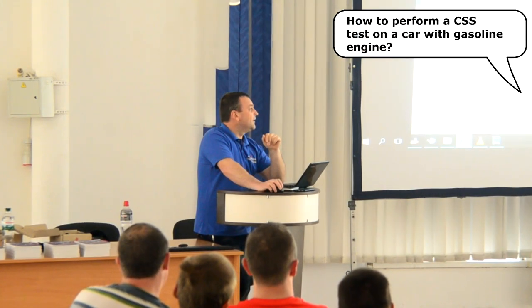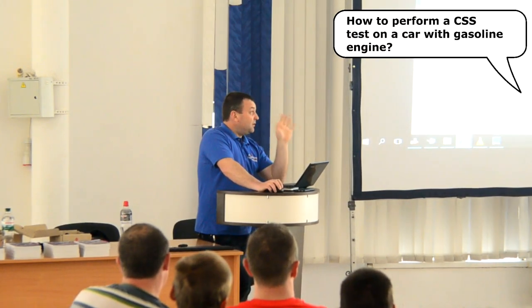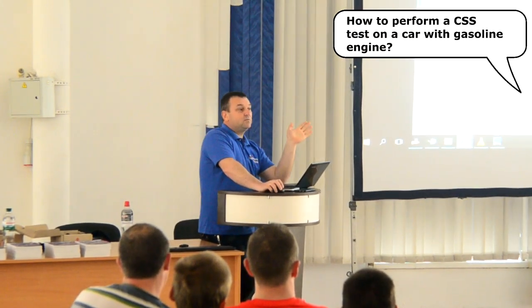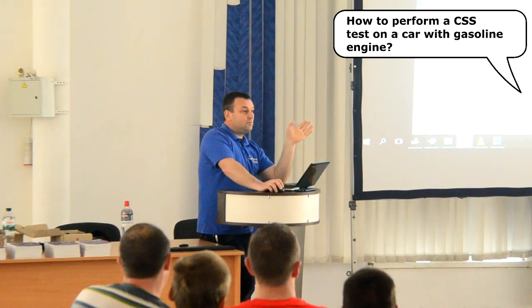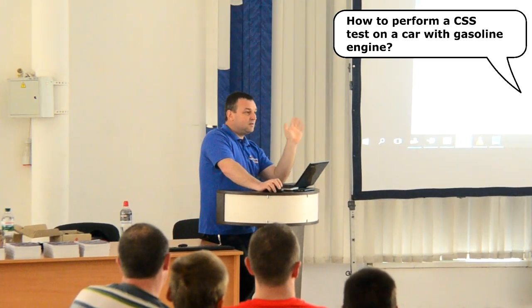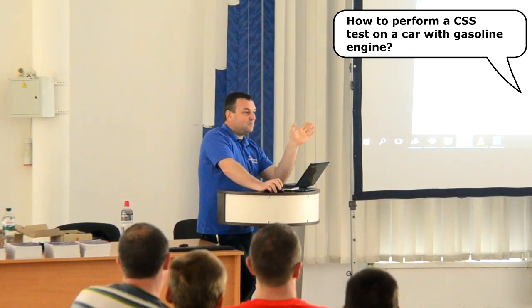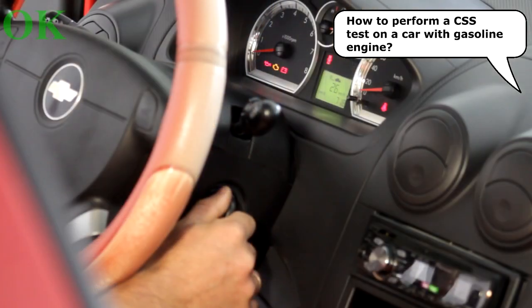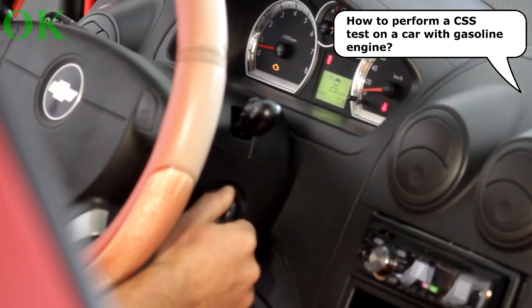After making all the necessary connections, the procedure for the gasoline engine is as follows. Start the engine and wait for the idle speed to stabilize. Start the recording in the USB oscilloscope program window.